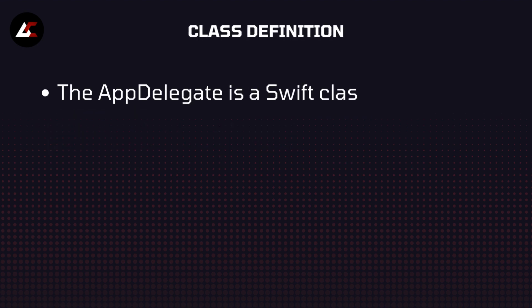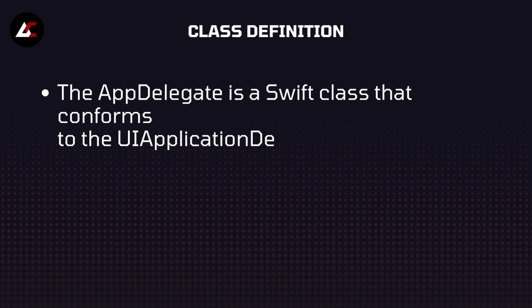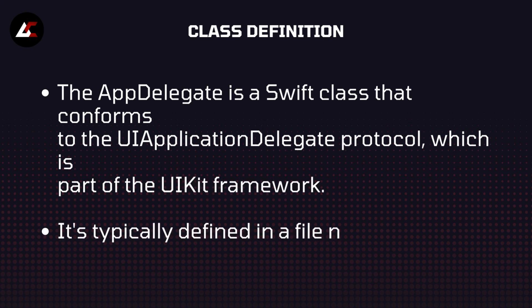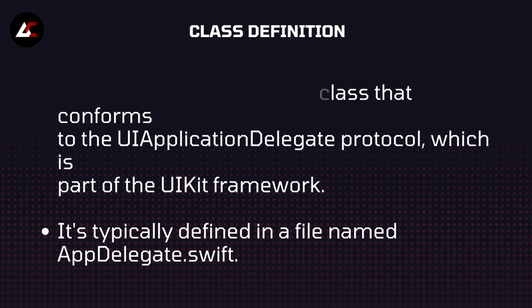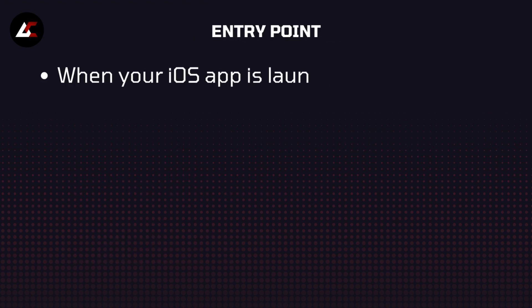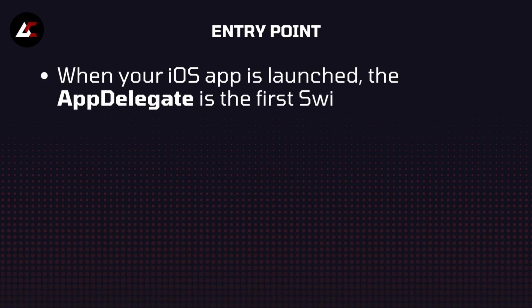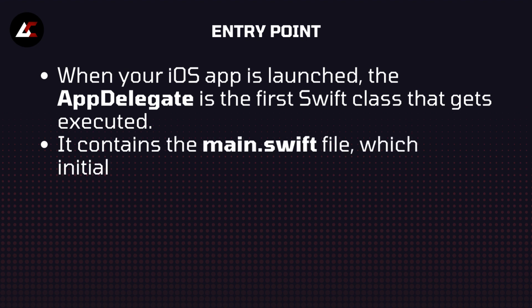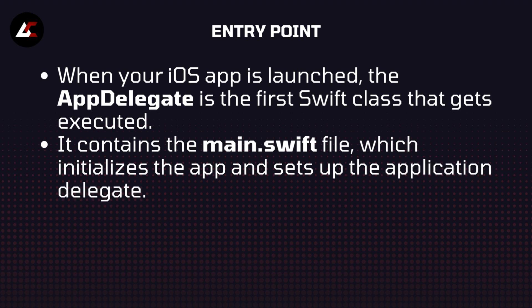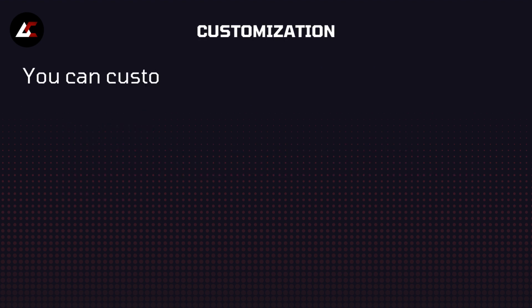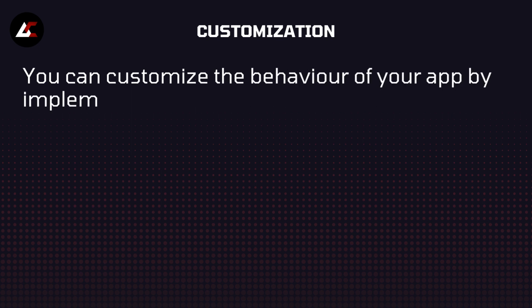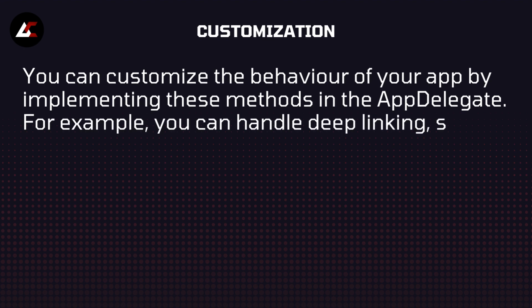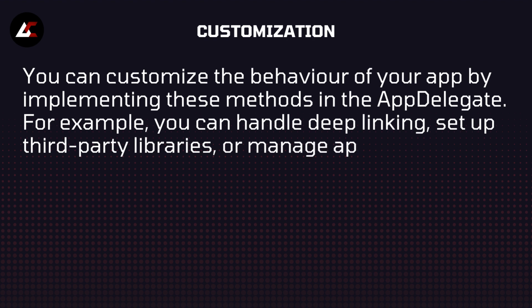The AppDelegate is a Swift class that conforms to the UIApplicationDelegate protocol, which is part of the UIKit framework. It is typically defined in a file named AppDelegate.swift. When your iOS app is launched, the AppDelegate is the first Swift class that gets executed. It contains the main.swift file which initializes the app and sets up the application delegate. You can customize the behavior of your app by implementing methods in the AppDelegate — for example, handling deep linking, setting up third-party libraries, or managing app-wide data.